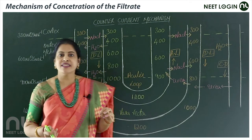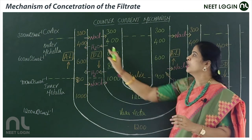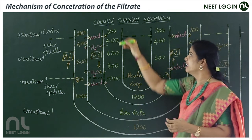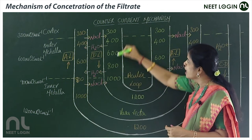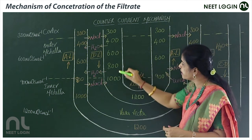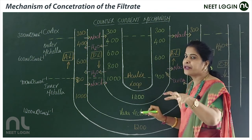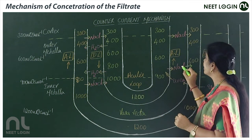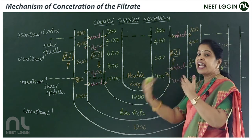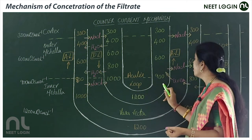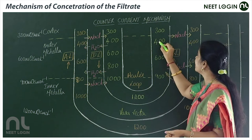Looking at the osmolarity gradient: in Henle's loop, as salts are added and water moves out, concentration increases when moving from outer medulla to inner medulla — 300, 400, 600, 800, and at the hairpin turn it reaches 1200 milli-osmoles per liter. Maximum osmotic gradient is seen at the hairpin turn in the inner medulla. In the ascending limb, ions move out but water is retained, so concentration decreases: 900, 600, 400, 300.